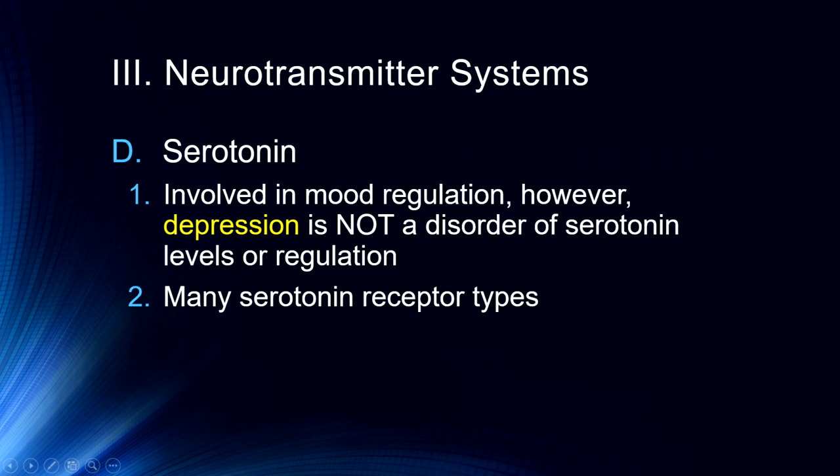Serotonin is involved in mood regulation and gets a lot of discussion because for a long time we believed it was part of what caused depression — that is, serotonin dysregulation. But that's actually not the case. Depression is not a disorder of serotonin levels or regulation. We do use selective serotonin reuptake inhibitors to treat depression, but they're treating depression by altering neural structures, not just neurochemistry. Serotonin, while involved in mood, is not the major culprit in depression. In fact, cortisol — a stress hormone we'll be talking about — is actually much more part of the causal process.